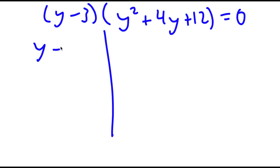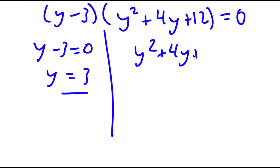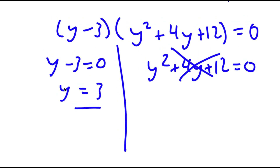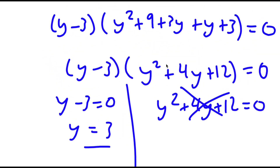So this gives me two equations: y minus 3 is equal to 0, which means y equals 3 — this is one solution. And y squared plus 4y plus 12 is equal to 0. To solve this we use the quadratic formula, which is negative b plus or minus the square root of b squared minus 4ac over 2a. But if you plug everything in, you end up getting a value less than 0 under the radical, so this won't work out. So y equals 3 is my only solution.